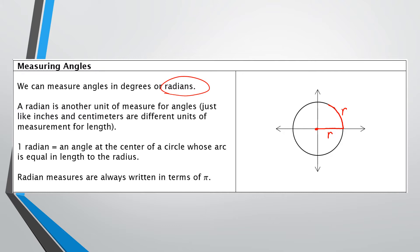It's the same measurement — one is curved on the circle and one is the straight radius. If I did that and then connected the center of the circle to the end of that arc distance, this angle marked with theta — that's a Greek letter — would be considered one radian.